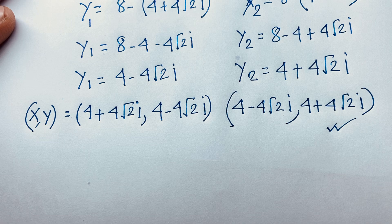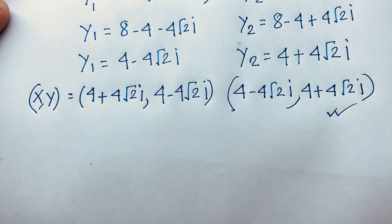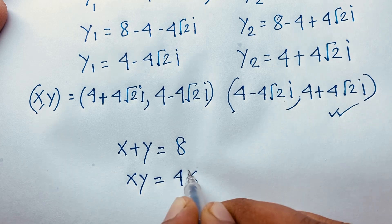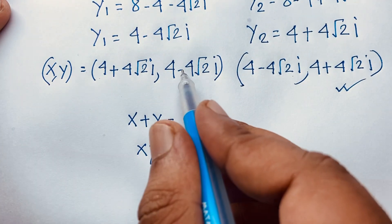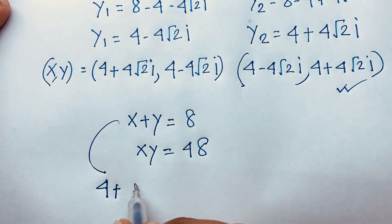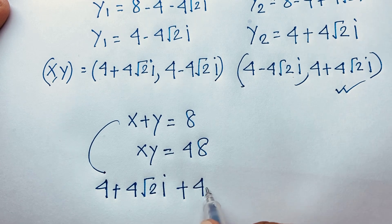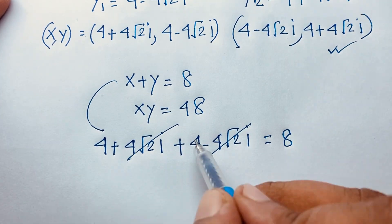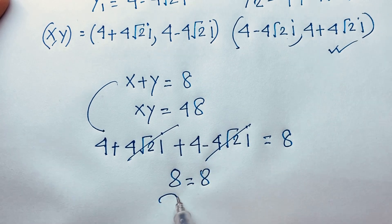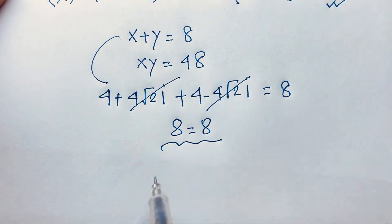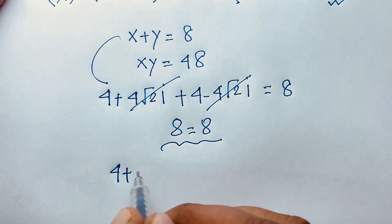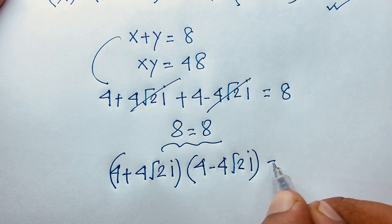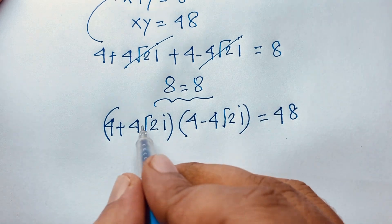Let's verify our answers. For the first equation x plus y equals 8: (4 + 4√2·i) + (4 − 4√2·i) = 4 + 4 = 8. The imaginary parts cancel, and the left-hand side equals the right-hand side. ✓